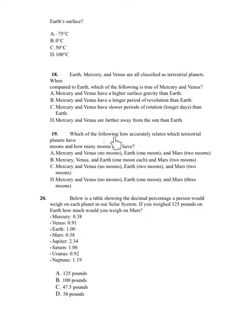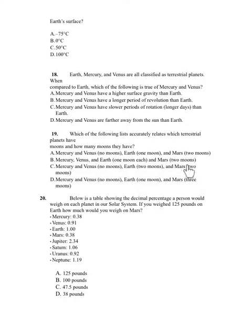Number 19. Which of the following lists accurately relates which terrestrial planets have moons and how many moons they have? A. Mercury and Venus have no moons, Earth has one moon, and Mars has two moons. B. Mercury, Venus, and Earth have one moon each, and Mars has two moons. C. Mercury and Venus have no moons, Earth has two moons, and Mars has two moons. D. Mercury and Venus have no moons, Earth has one moon, and Mars has three moons.